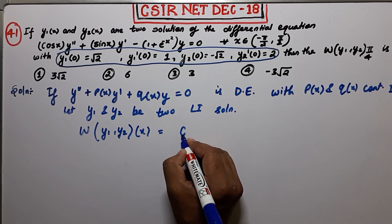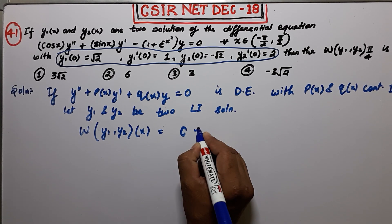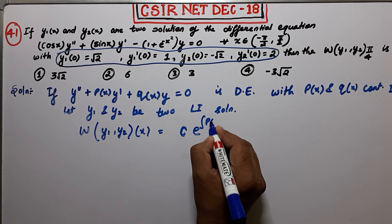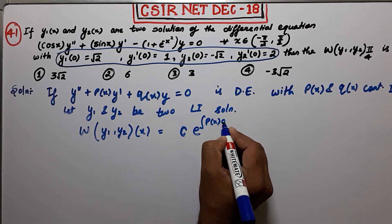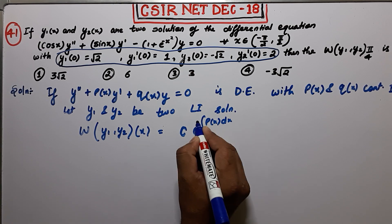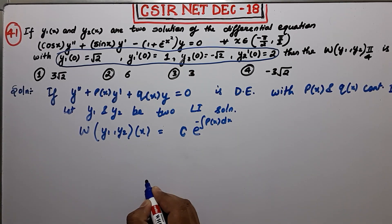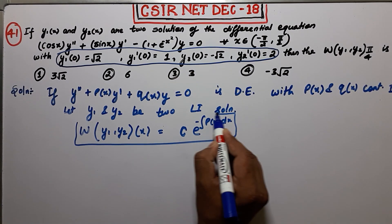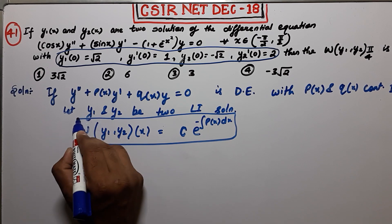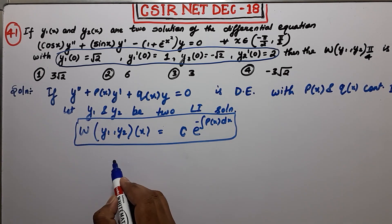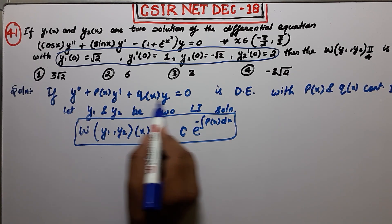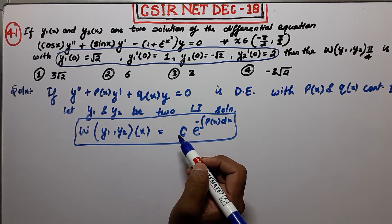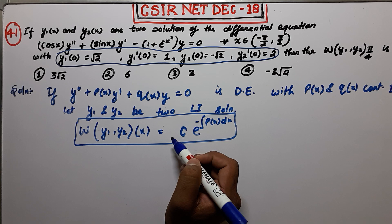Then the Wronskian of y1 and y2 at a certain point is given by W = C·e^(-∫p(x)dx). This is the formula (Abel's formula) for finding the Wronskian of two LI solutions of this type of differential equation.